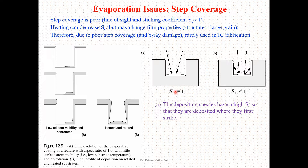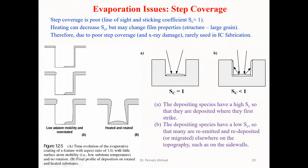Now let's revisit the sticking coefficient. In figure A, the sticking coefficient is equal to one, and in figure B it is smaller than one. When the sticking coefficient equals one, the depositing species have a high sticking coefficient, meaning they are deposited where they first strike the surface.